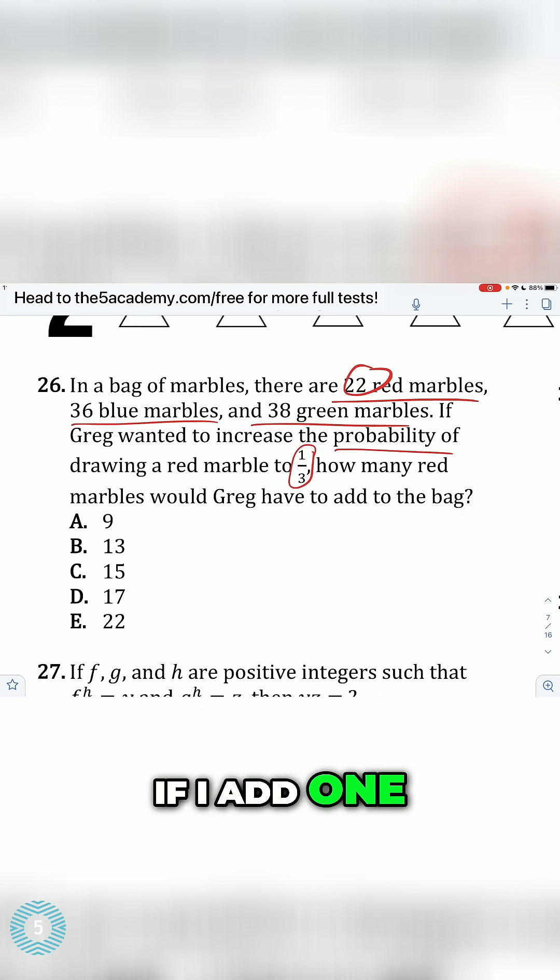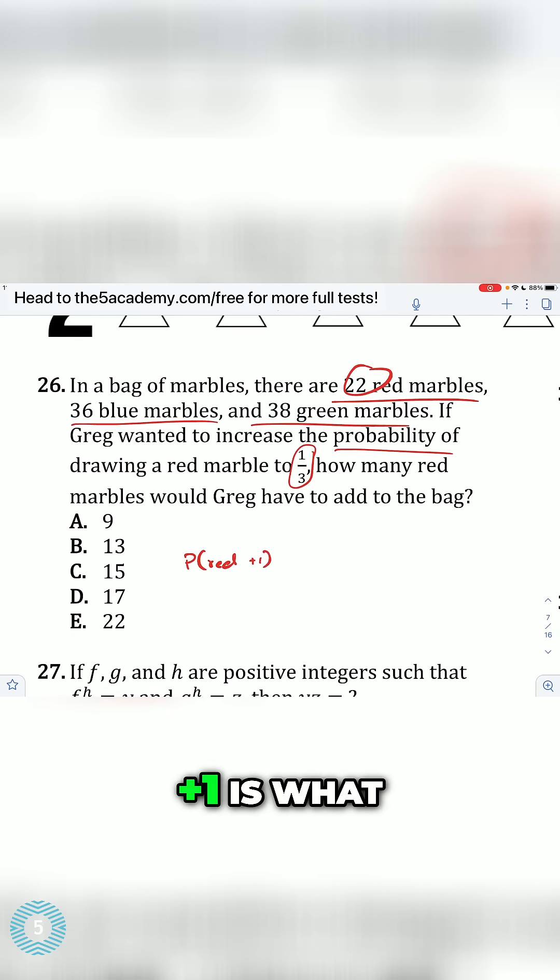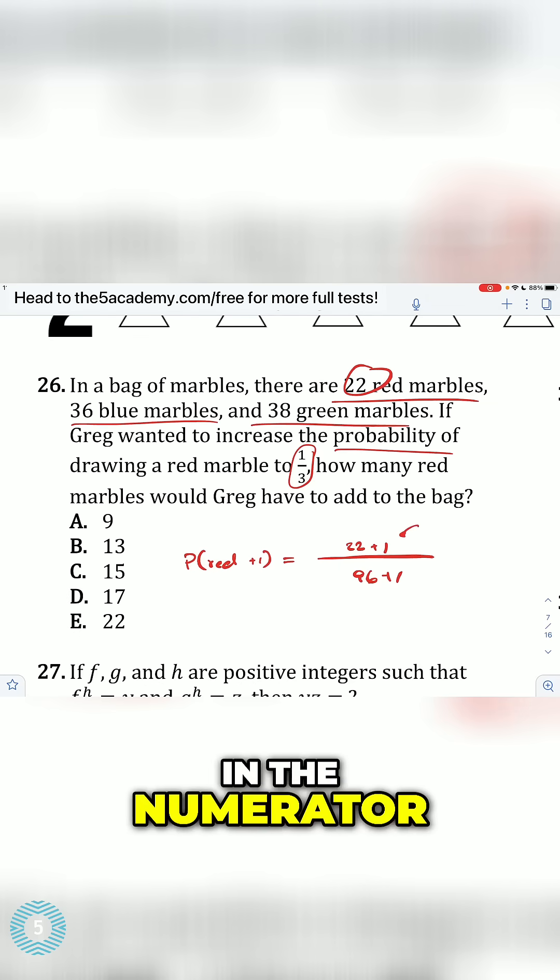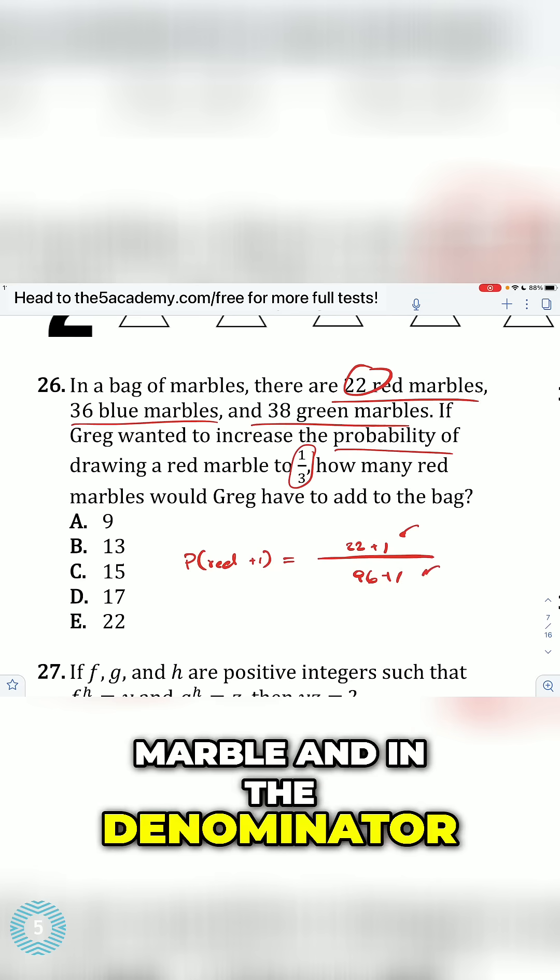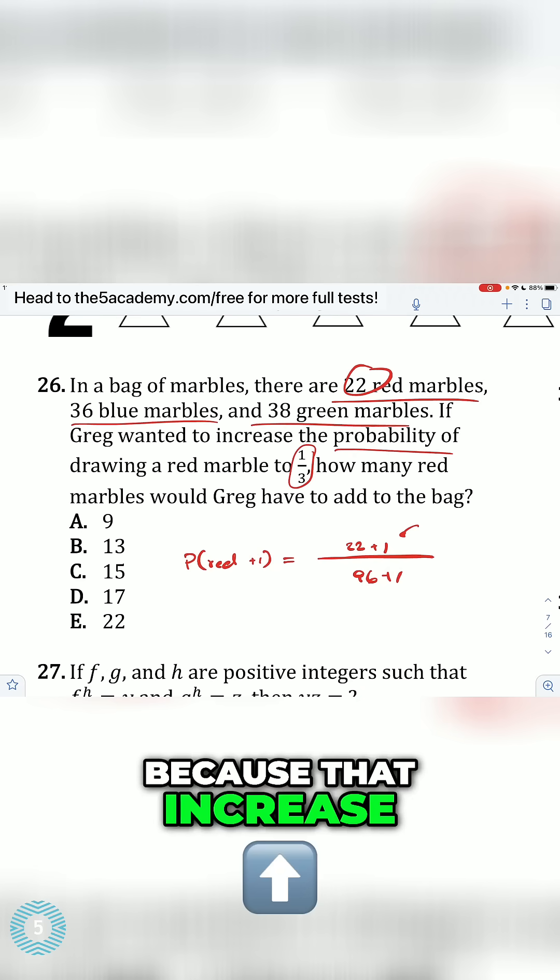If I add 1, what happens? My probability of red, when we do plus 1, is what? 22 plus 1, right? Because I added 1 red marble, divide by 96 plus 1. Because again, in the numerator, I added 1 red marble. And in the denominator, I also added 1 red marble to the total.